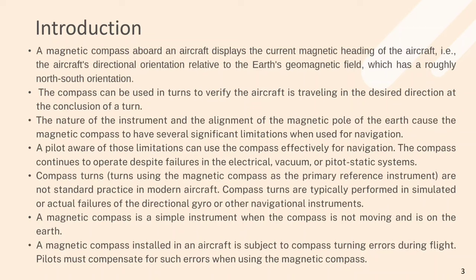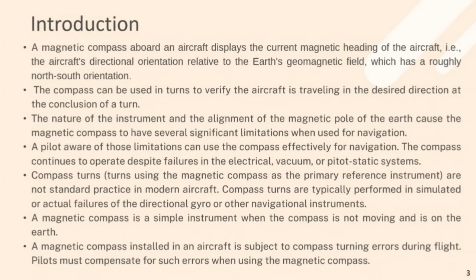A magnetic compass aboard an aircraft displays the current magnetic heading of the aircraft, i.e. the aircraft's directional orientation relative to the Earth's geomagnetic field, which has a roughly north-south orientation. The compass can be used in turns to verify the aircraft is travelling in a desired direction at the conclusion of a turn. The nature of the instrument and the alignment of the magnetic pole of Earth causes the magnetic compass to have several significant limitations when used for navigation.